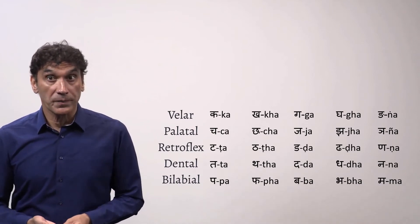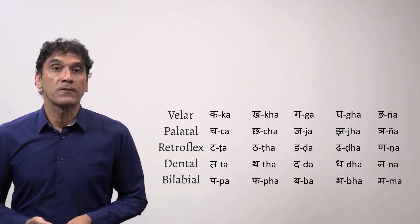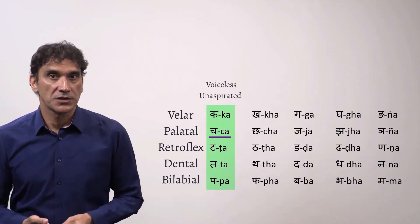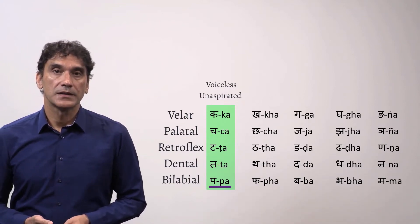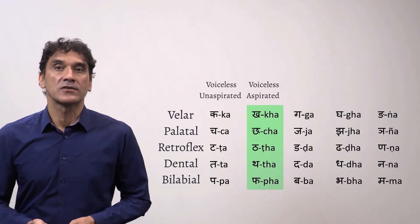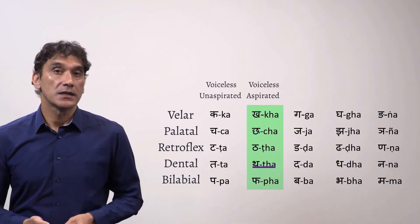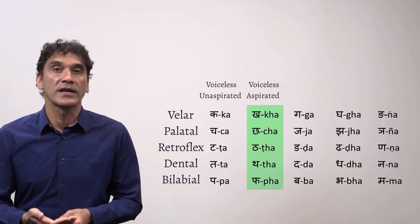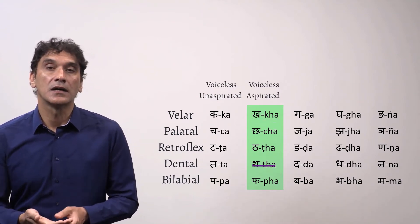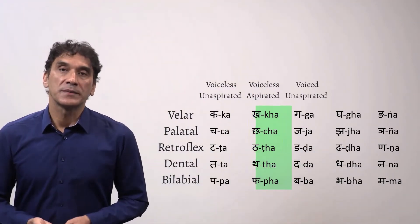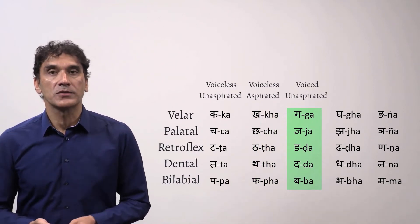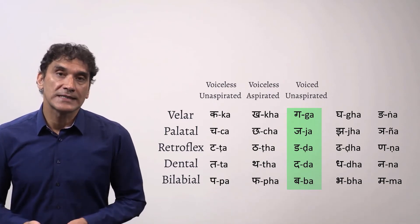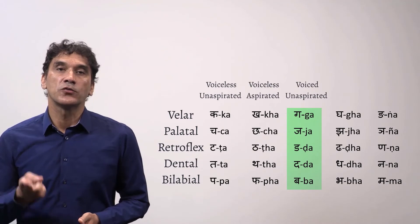So that was the phonetic explanation of the rows. Now let's take the columns, which are organized based on voicing, aspiration, and nasal. The first column is voiceless unaspirated consonants. The second column is voiceless aspirated consonants — the aspirated counterpart of the first column, meaning there is a puff of air going out. The third column is voiced unaspirated consonants — while pronouncing these sounds, you feel a little vibration in your throat. You can place two fingers on your throat and feel the vibration.